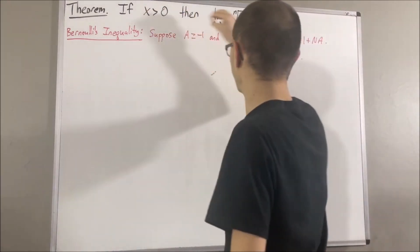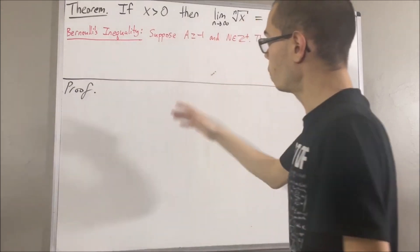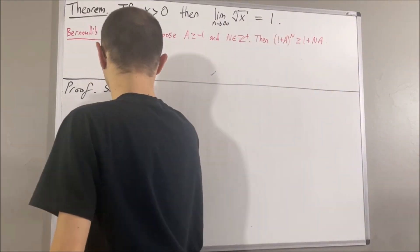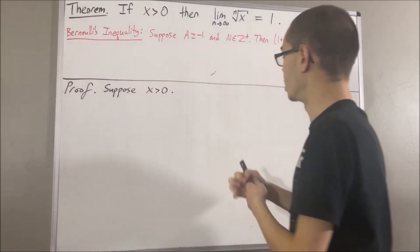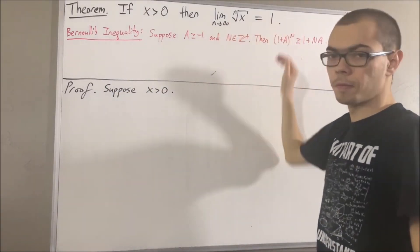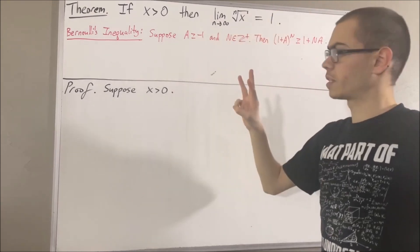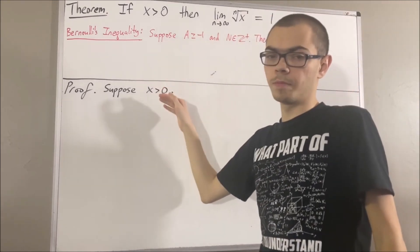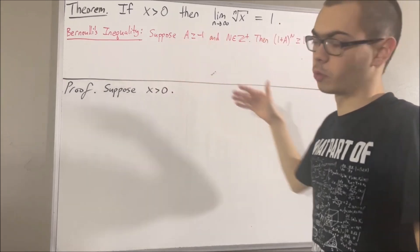So now let's get into proving this theorem. To start out the proof, we'll suppose x is greater than 0. From here, the whole goal is to prove that the limit of this sequence is equal to 1. To prove that, we're going to split this up into three cases: either x is between 0 and 1, x is equal to 1, or x is bigger than 1.